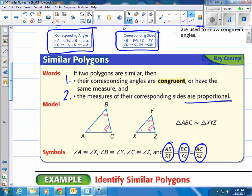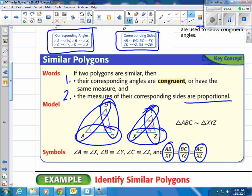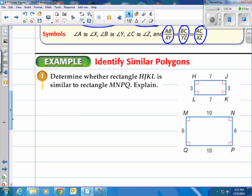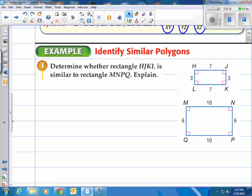That means, for instance, AB and XY, that ratio is the same as BC and YZ, which is the same as AC and XZ. And to prove those or show you this in the real world here, let's do an example. This is identify similar polygons.